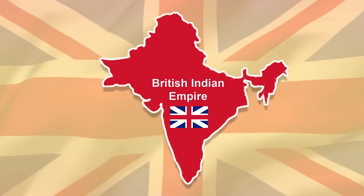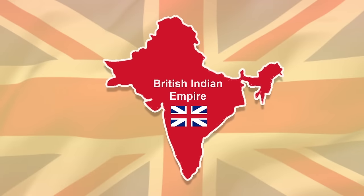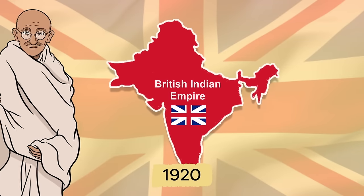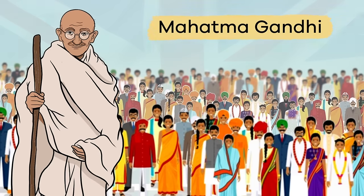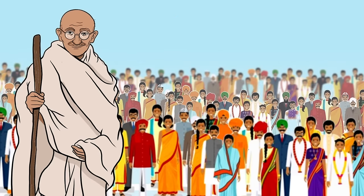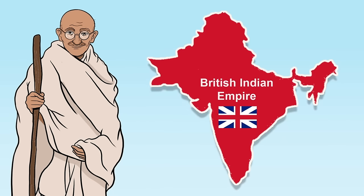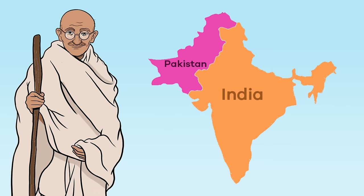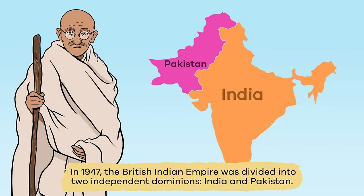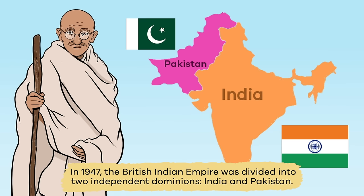British rule lasted for several decades, until 1920, when a civil rights leader named Mahatma Gandhi led a campaign of nonviolence against the British government. In order to seek independence, this movement eventually led to the end of British rule. And in 1947, the British Indian Empire was divided into two independent dominions: India and Pakistan.